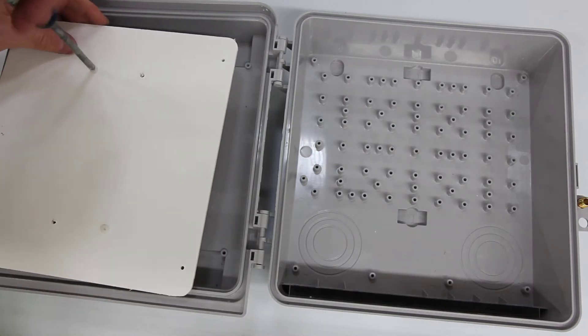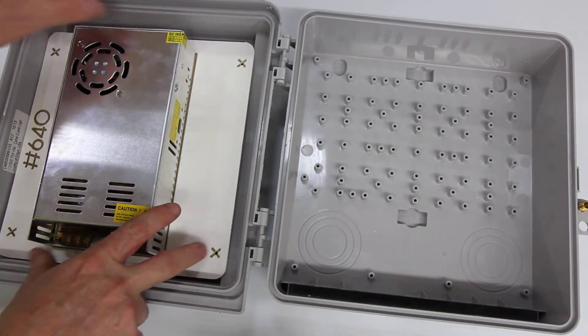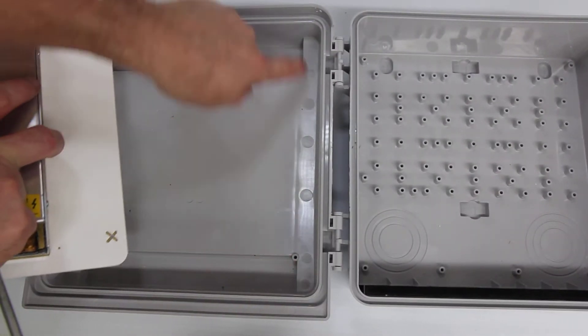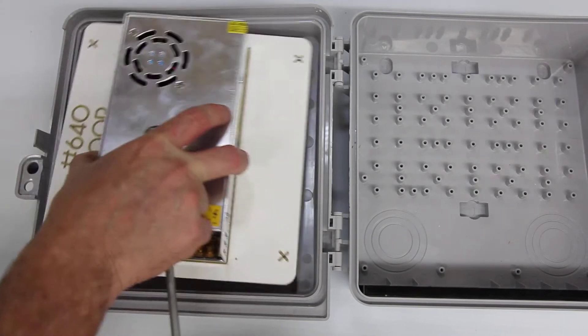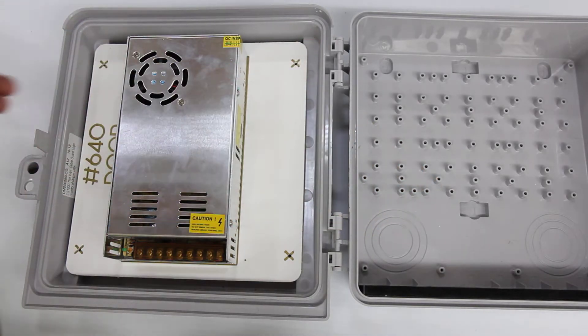So you would go ahead and, of course, do that for all four holes. What we're going to do is just now drop this in. And there are four screw holes here on the base of the door. And you'll use the included self-tapping stainless screws.